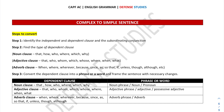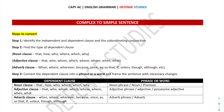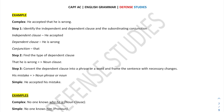There are predefined rules to convert a dependent clause into a phrase or word. A noun clause can be converted into a noun phrase, an adjective clause into an adjective phrase, and an adverb clause into an adverb phrase.